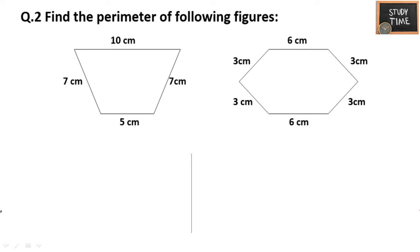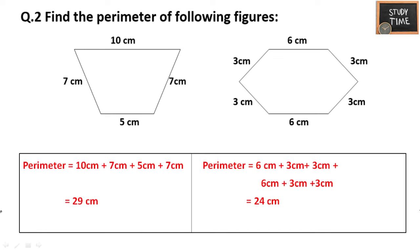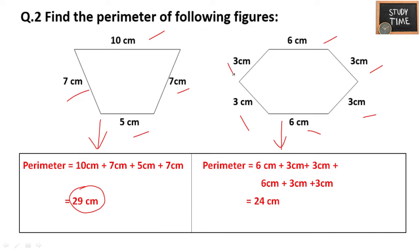Second question: find the perimeter of the following figures by adding all the boundaries. For the first figure: 10 cm plus 3 cm plus 5 cm plus 7 cm gives a total perimeter of 29 centimeters. For the second figure: 6 plus 3 plus 3 plus 6 plus 3 plus 3 gives 24 centimeters.